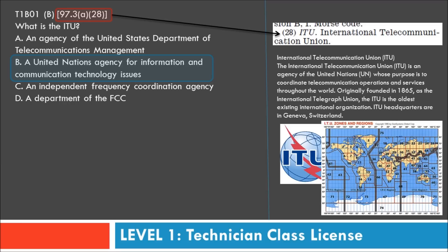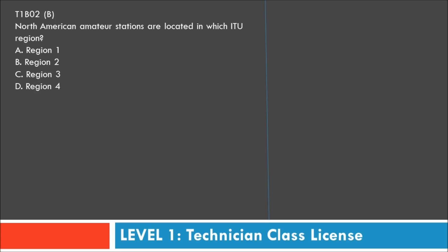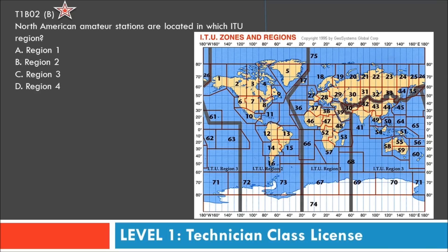Question two: North American amateur stations are located in which ITU region? Options are Region 1, 2, 3, or 4. This question doesn't reference Part 97 because the ITU is an international organization, not a US/FCC body. Looking at the ITU world map, all of North America is located in ITU Region 2.